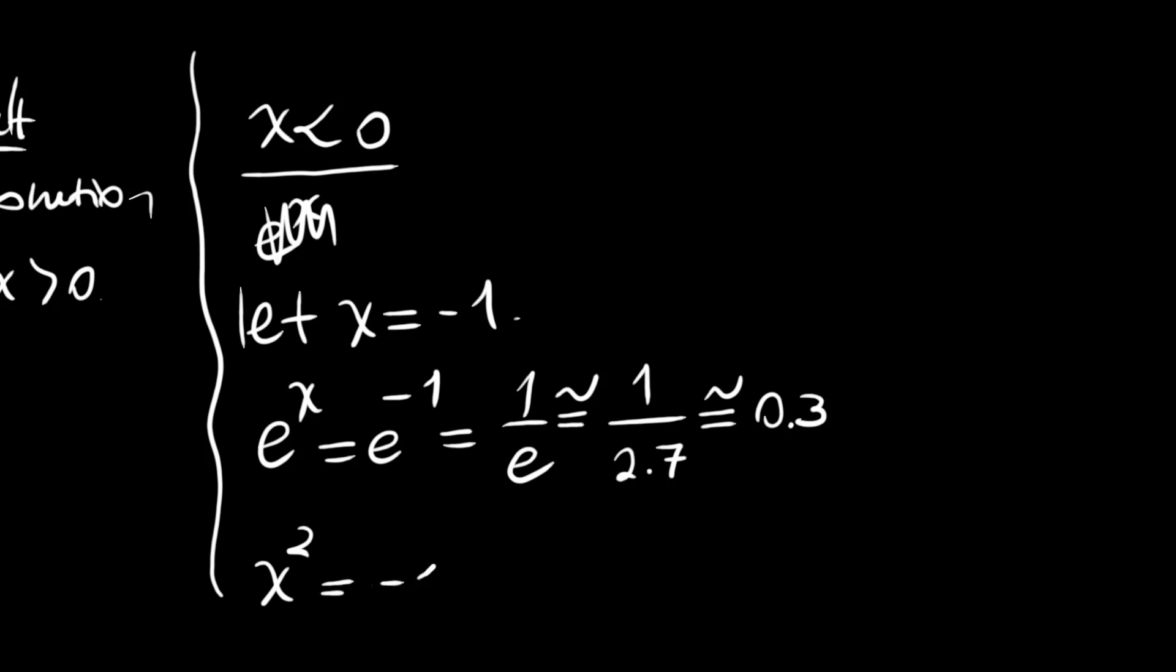And x^2, which is (-1)^2 = 1. So the sum of these two, actually e^x + x^2, looks greater than 1. So x = -1 is not a 0.